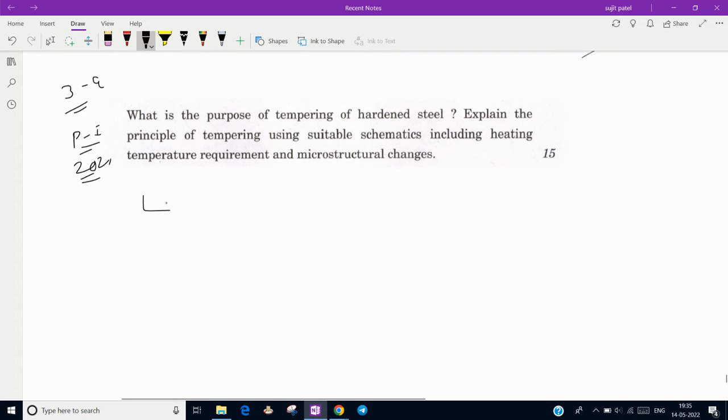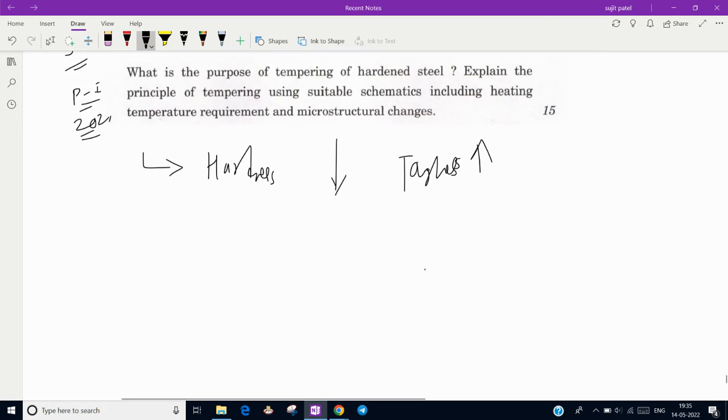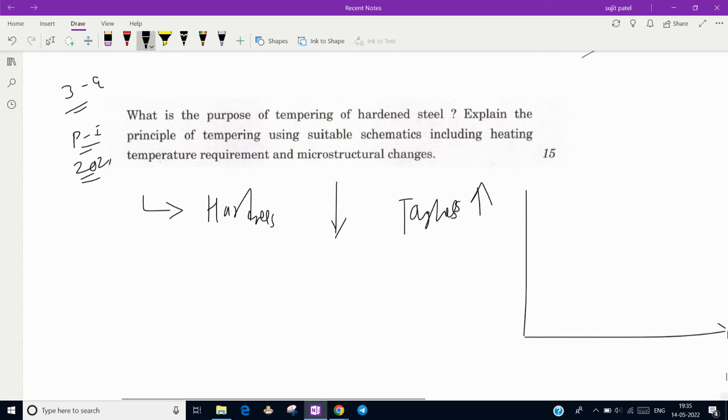The purpose of tempering of hardened steel is to reduce its hardness and to increase the toughness of the hardened steel. Now, we need to explain the principle of tempering using suitable schematics including heating temperature requirements and microstructural changes.